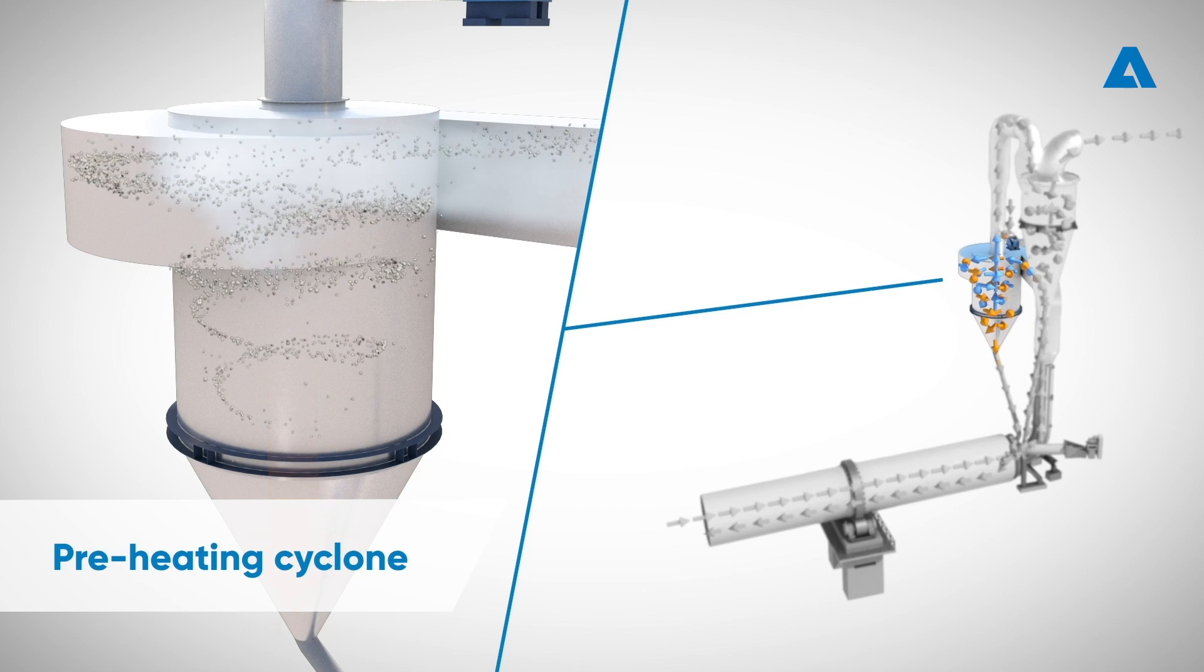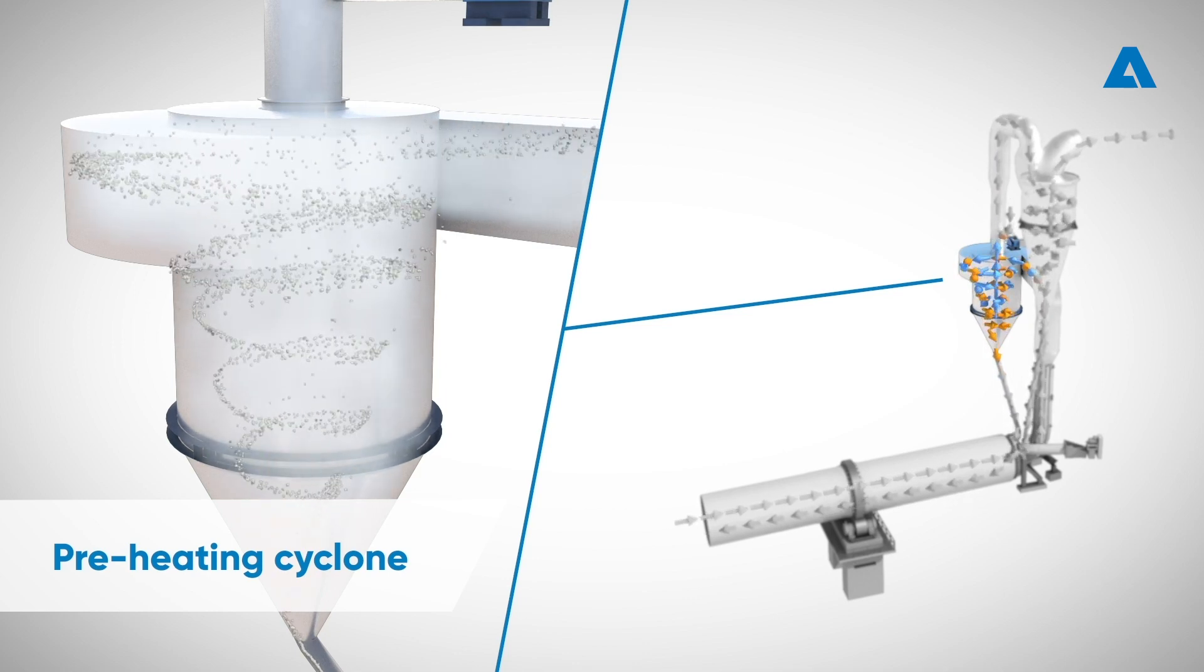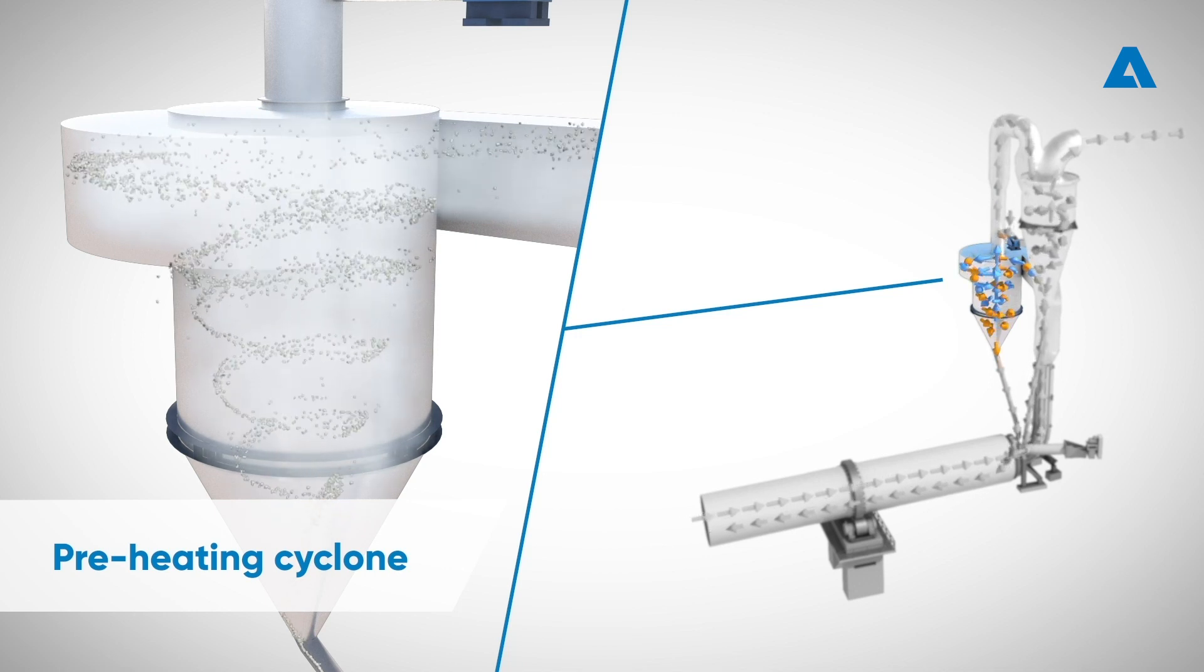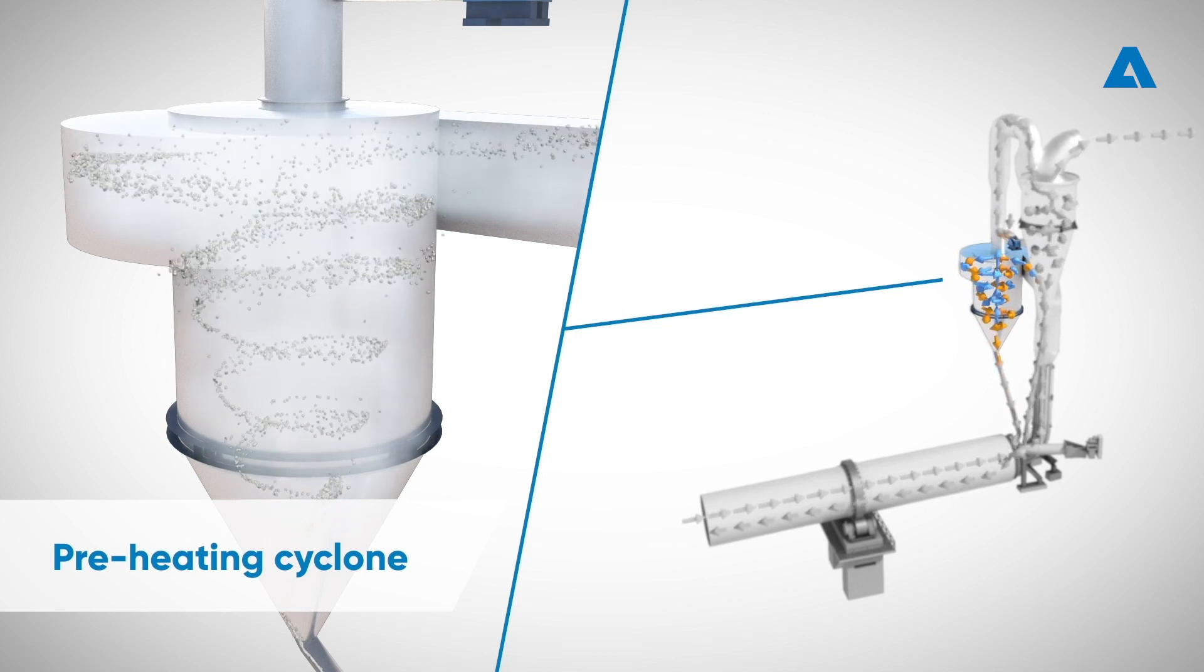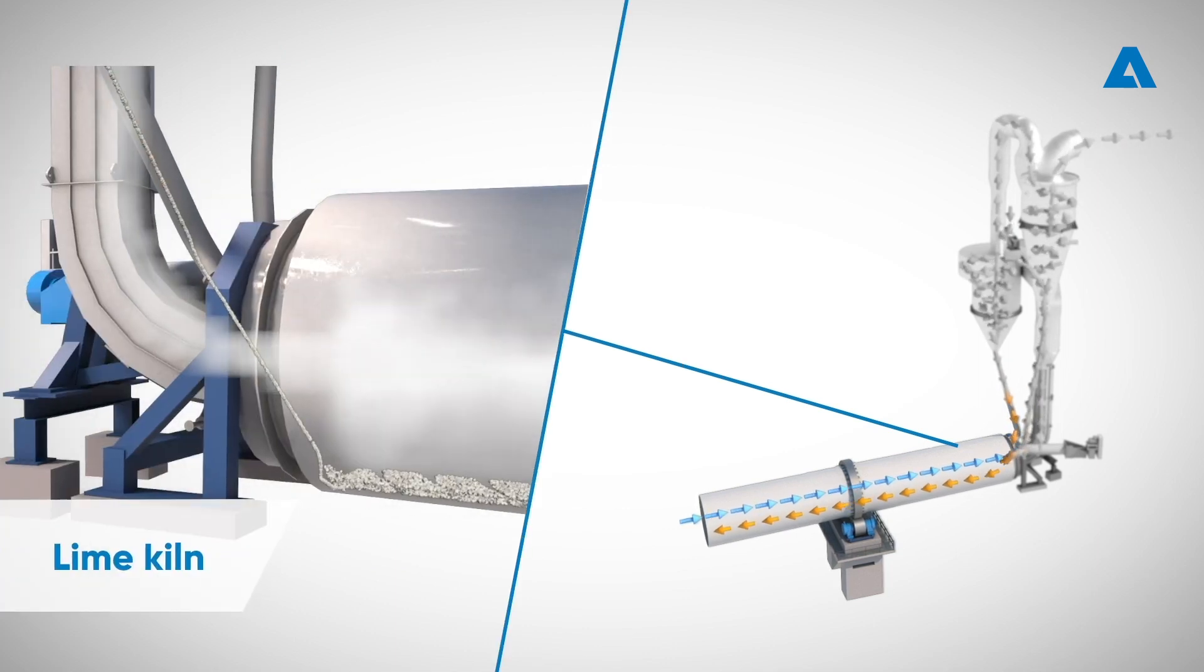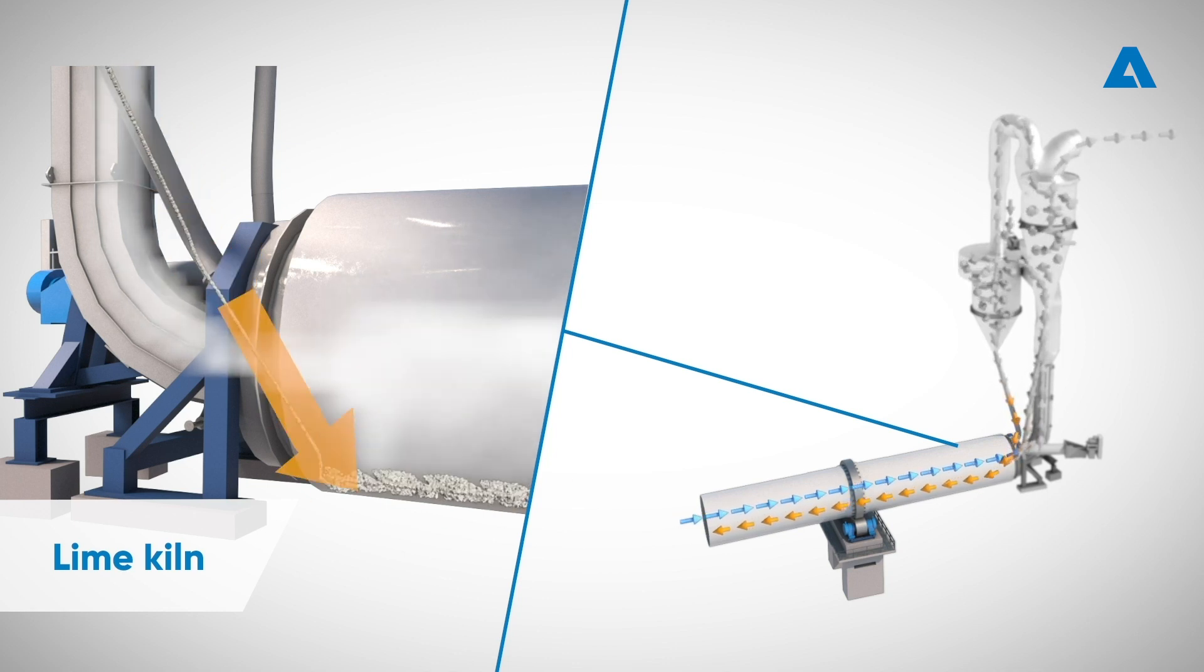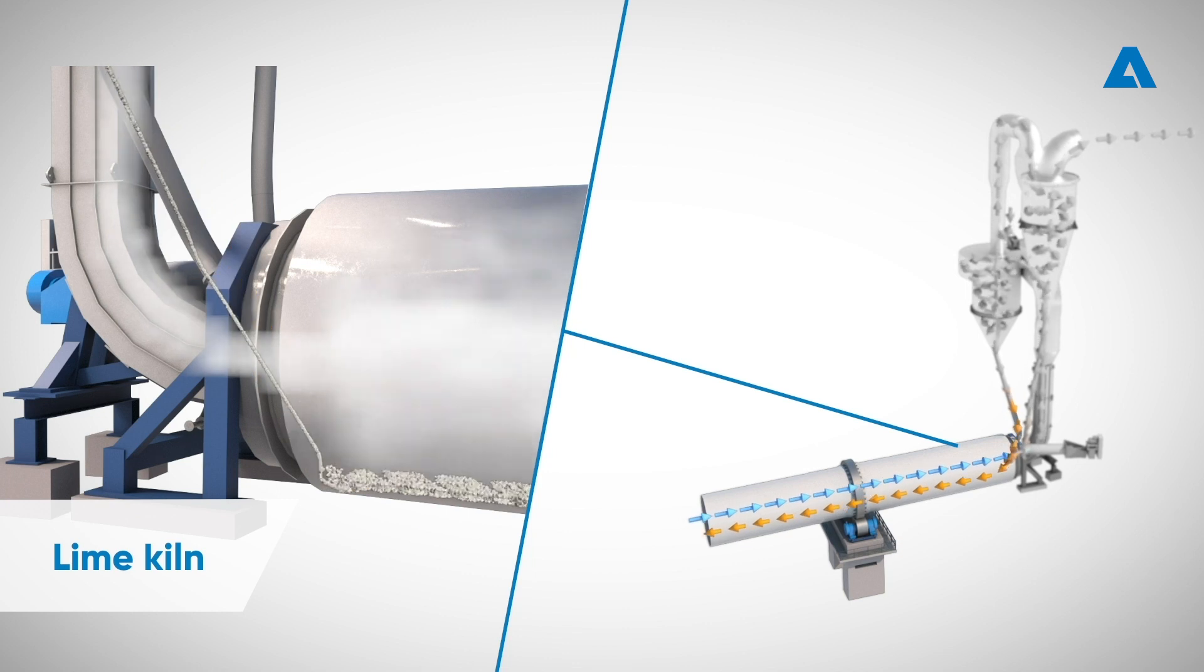The preheating cyclone separates the heated lime mud from the flue gas. The calcination process starts and lime mud flows by gravity through a chute entering the rotating lime kiln. Due to the higher temperature of the lime mud entering the lime kiln, the calcinating process continues with better energy efficiency. This means higher capacity with a shorter lime kiln.